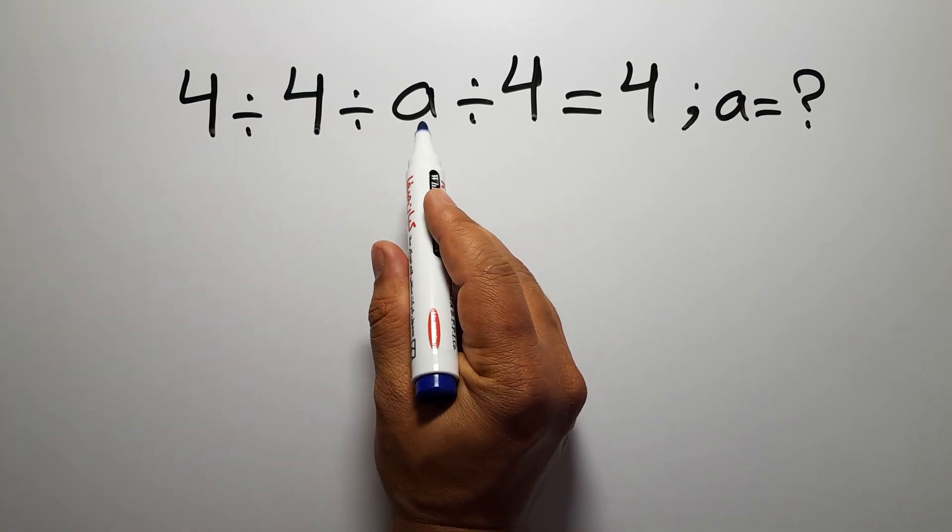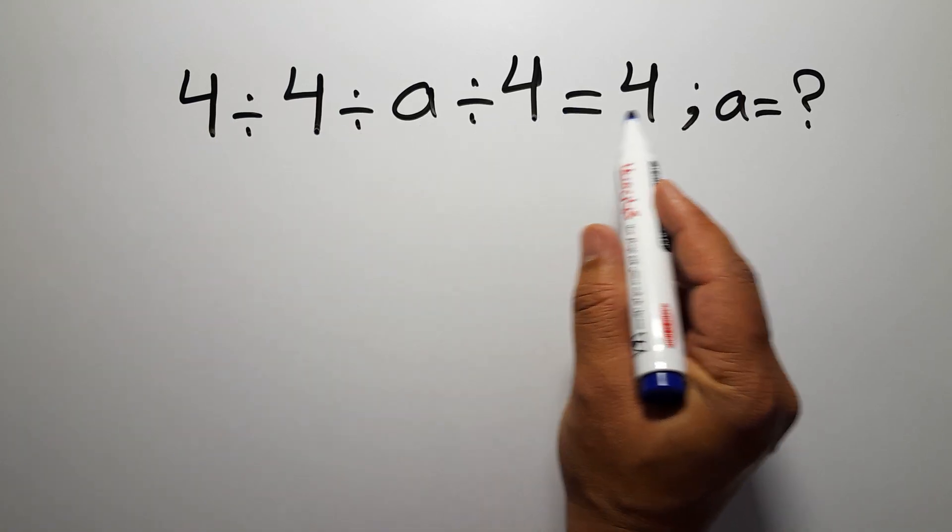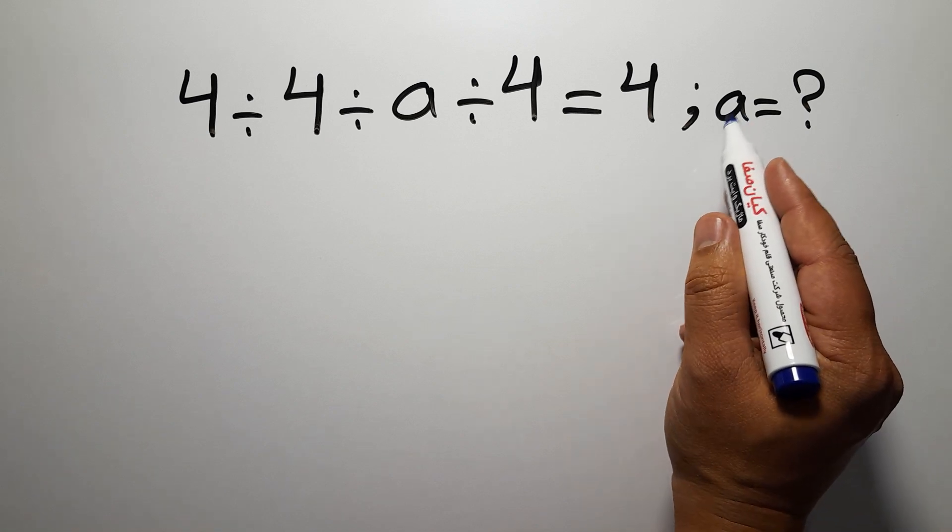4 divided by 4 divided by a divided by 4 equals 4. Our goal is to find the value of a.